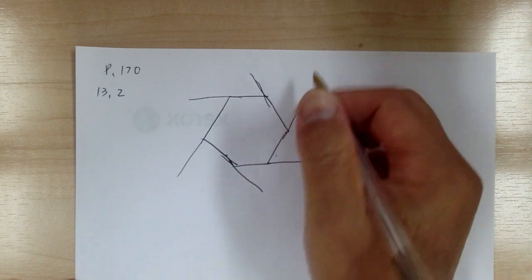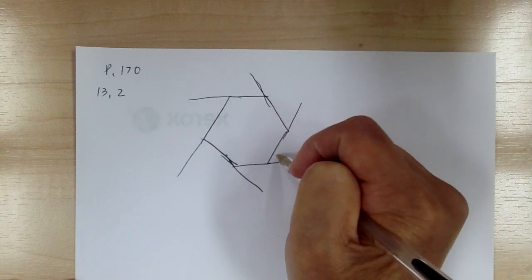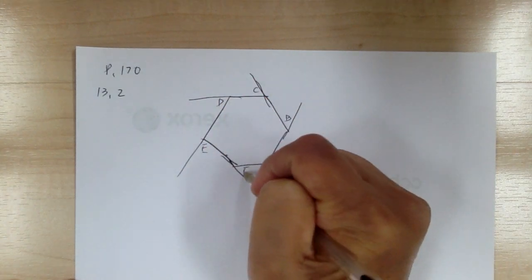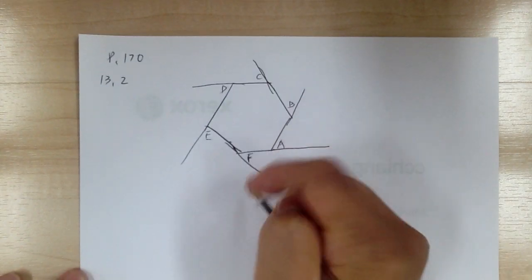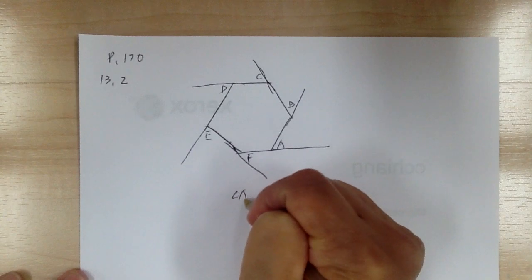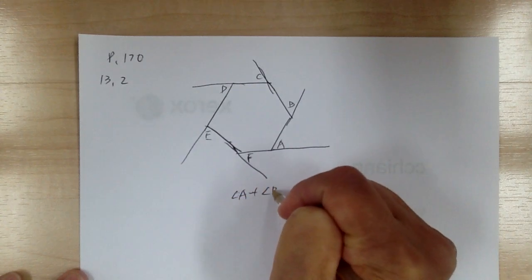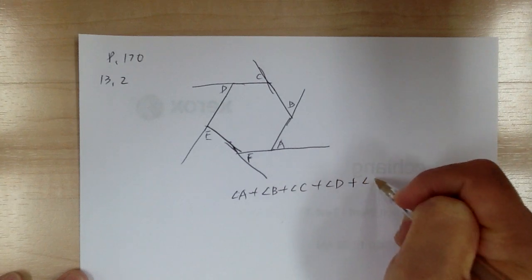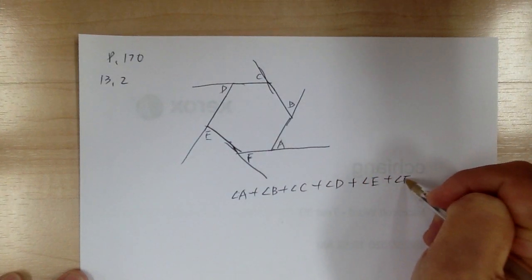So angle A plus angle B plus angle C plus angle D plus angle E plus angle F will always equal 360 degrees. We're using a regular hexagon here.